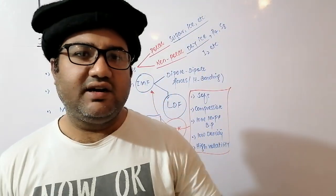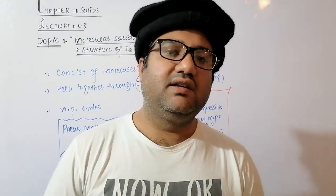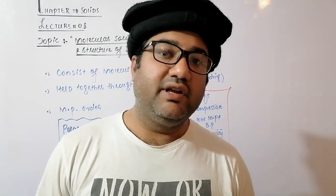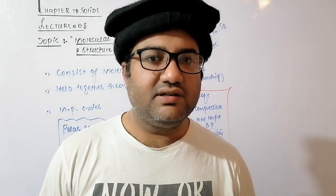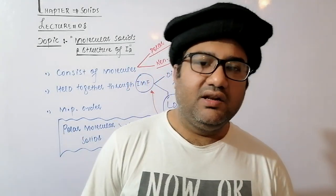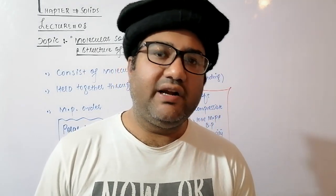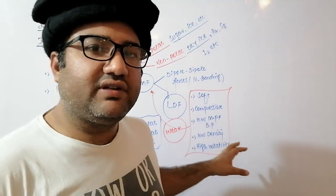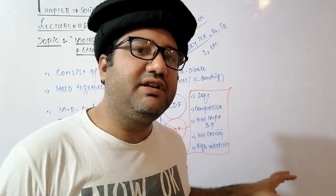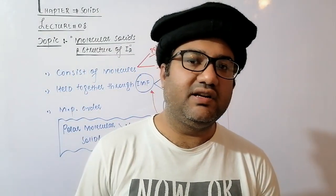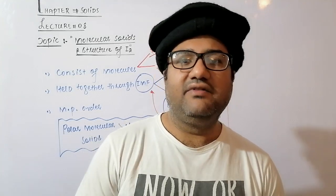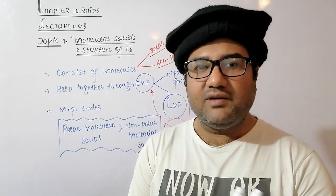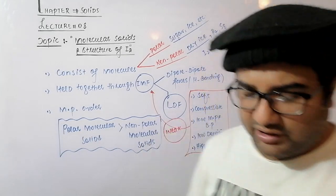A question that was asked in the entrance test of MDK: a solid melts at zero degrees and is soft in nature — what type of solid is it? There is no ionic, covalent, or metallic solid that melts at zero degrees. This is a characteristic feature of molecular solids. Ice melts at zero degrees, so the correct answer was molecular solid.